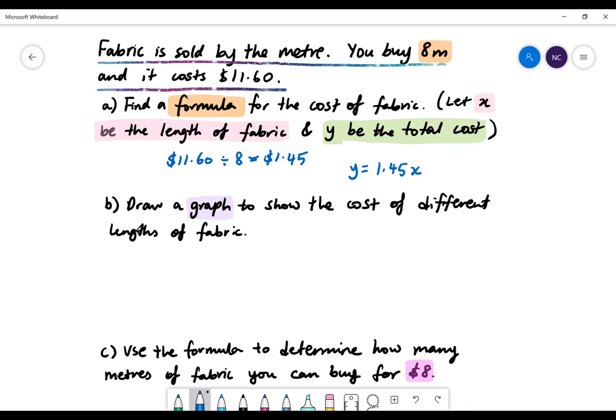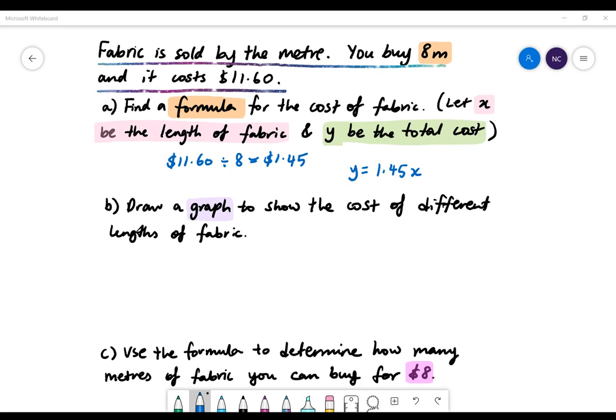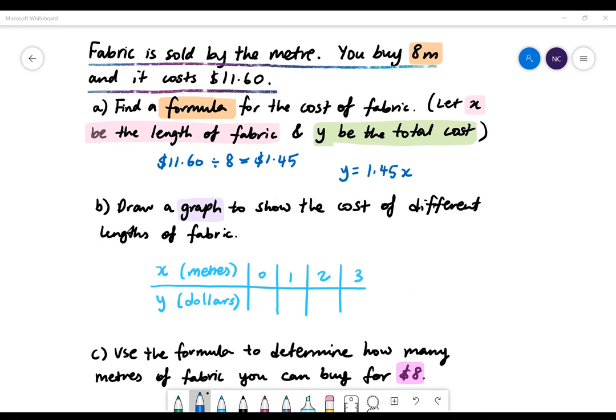Part B: Draw a graph to show the cost of different lengths of fabric. First, we'll have a table of values. Our table includes possible values of X. X represents the length of fabric, so we can begin with X equals 0. To find Y, which is the total cost, we need to substitute X into the formula from part A. When X equals 0, Y also equals 0.